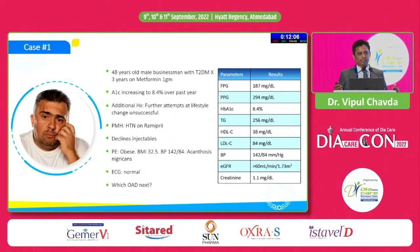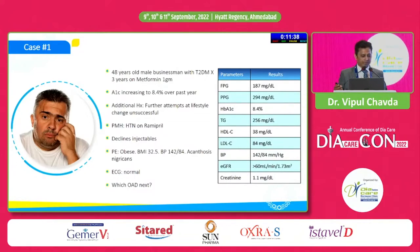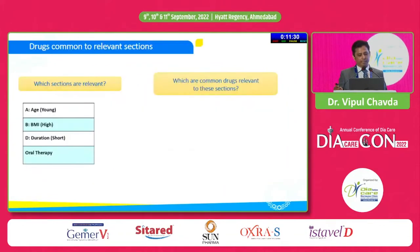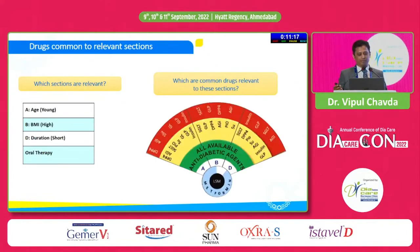Let's take some patients as examples using the RSSDI Therapeutic Wheel. Case 1: a 48-year-old businessman with type 2 diabetes for 3 years, on metformin 1g, A1C 8.4, unsuccessful lifestyle modification, hypertensive on ramipril, BMI 32, BP 142/84, signs of insulin resistance with acanthosis nigricans, and normal ECG. The key factors are: short duration of 3 years, BMI 32, and young age — so we need a molecule that reduces BMI and weight, and oral therapy is appropriate.